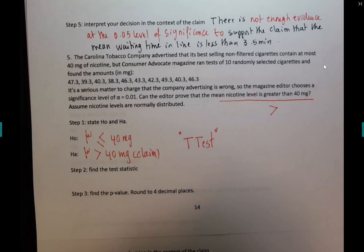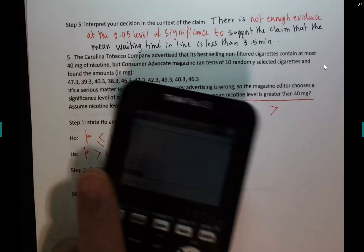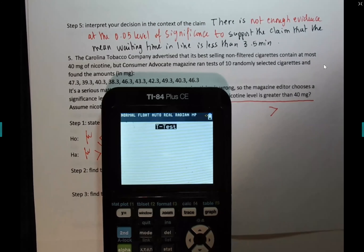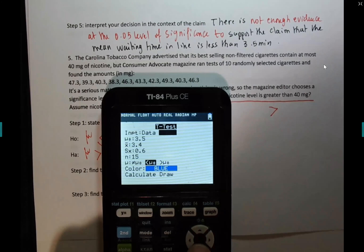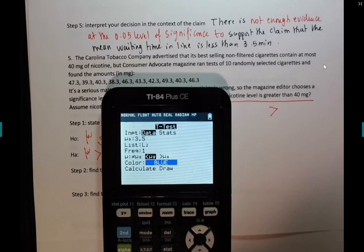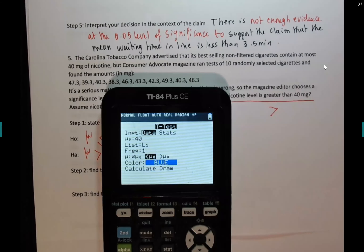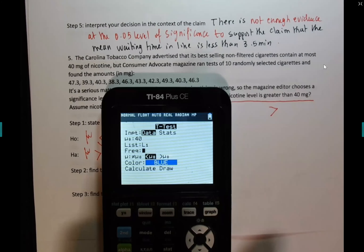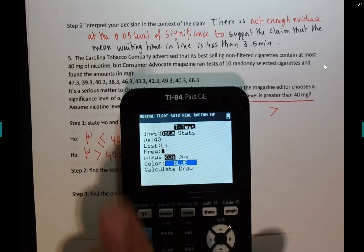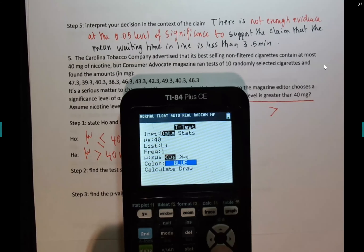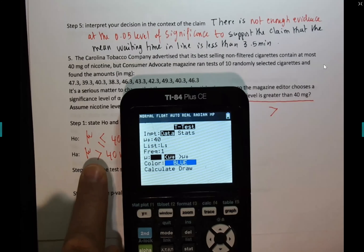We're ready to do the t-test with the data in L1. Go to STAT, TESTS, number 2 — that's section 7.3. Data input is 'Data.' What we're testing against is 40. My list is in L1. Frequency — leave it at 1 always. Can you tell me what sign to use? First, second, or third? Third. I agree — it's right there, just copy it.